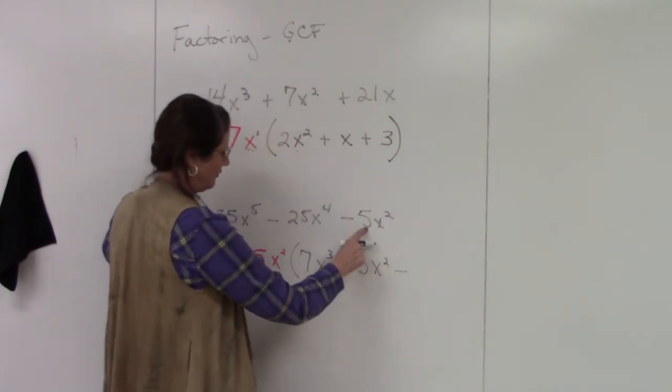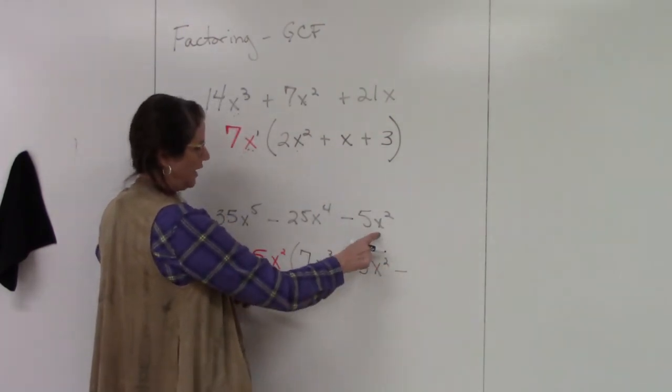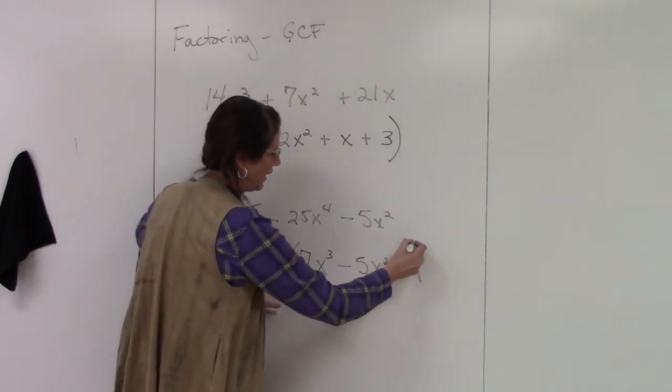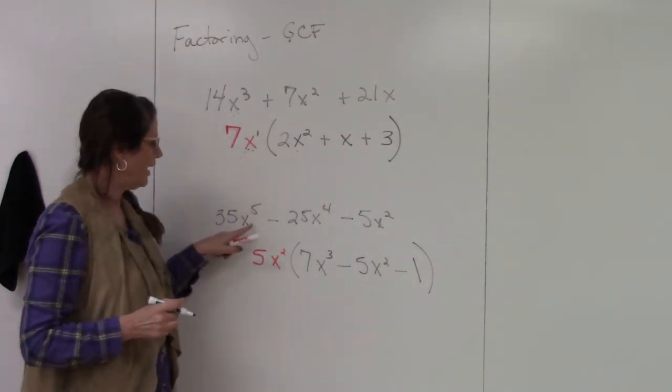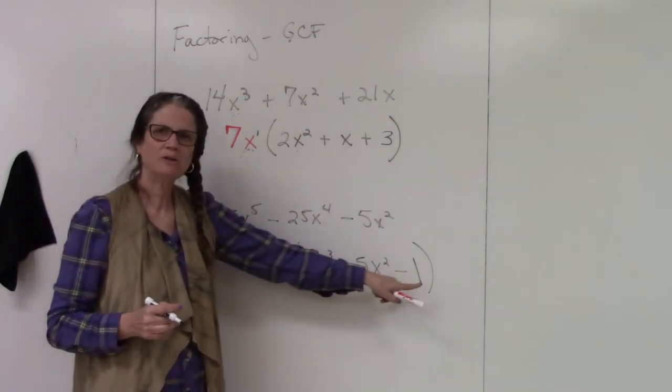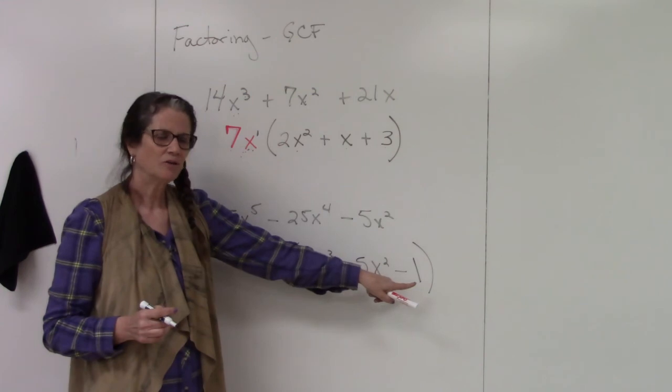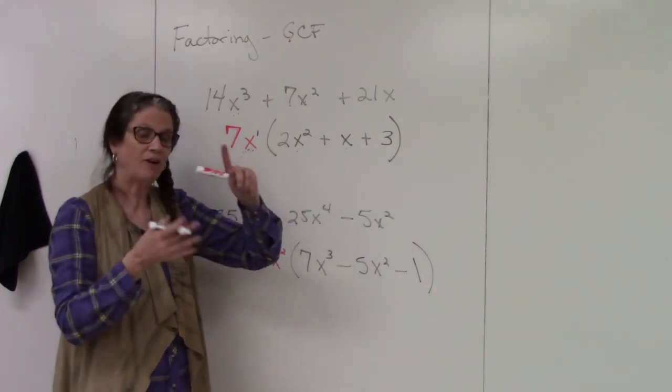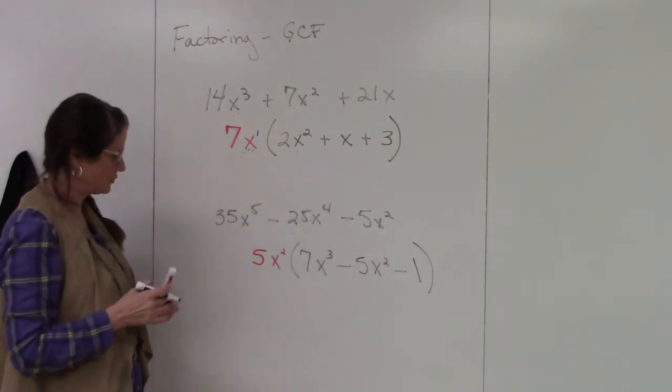Minus 5 divided by 5 is 1. x² divided by x² is also 1. Do not forget the 1, all right? If you have a trinomial in the beginning, you should have a trinomial inside the parentheses. You shouldn't just leave it blank because it factors to 1 or it cancels to 1.